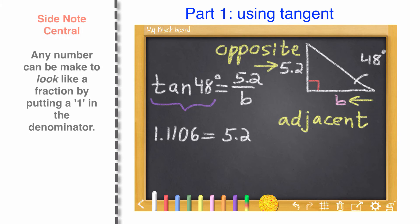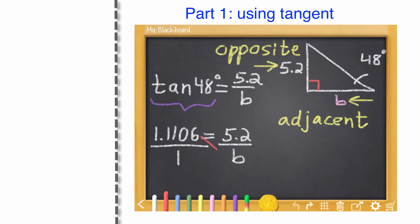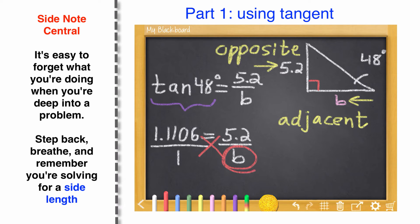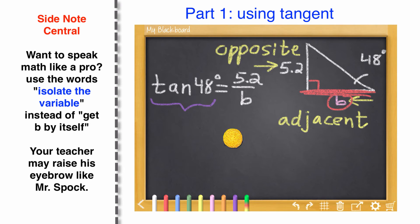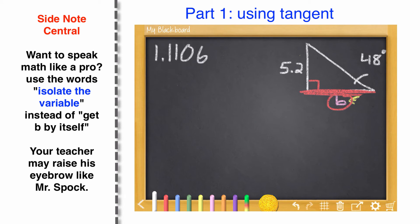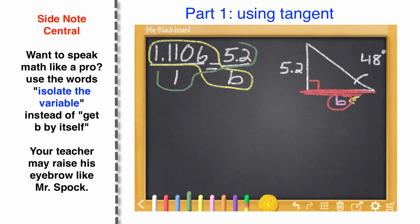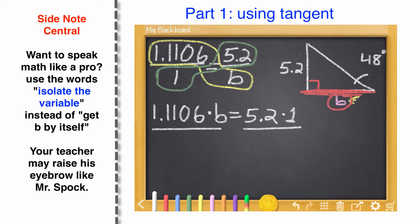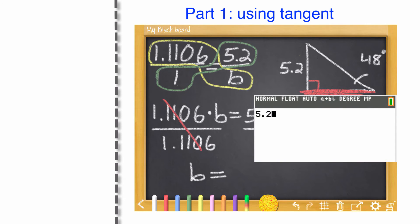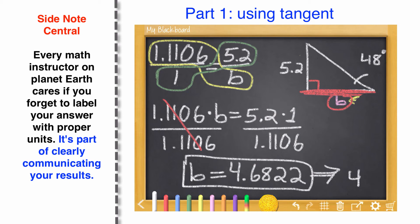We're going to replace tangent 48 with the calculated result: 1.1106. I like to use four digits. Then put a 1 underneath that, and use a cross product to solve this — to find the value of B. Remember, B is the side length of the triangle. So: 1.1106 multiplied by B equals 5.2 multiplied by 1. Divide both sides by 1.1106 to get B all by itself. And don't forget to label your answer in the proper units — centimeters.